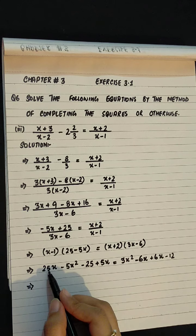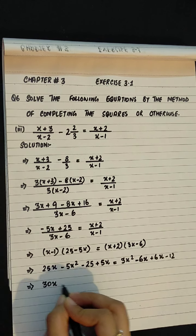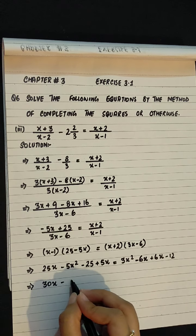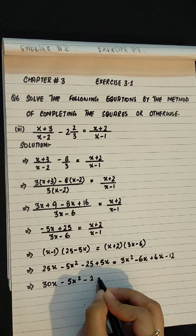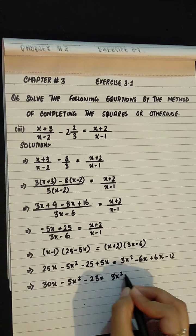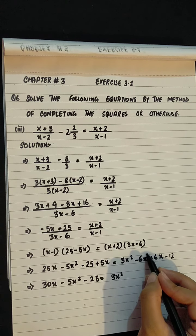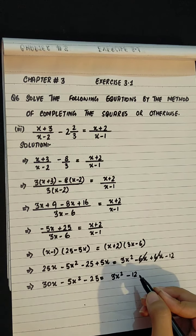25x plus 5x is 30x minus 5x square minus 25 equals to 3x square. Minus 6x, positive 6x cancel. Minus 12.